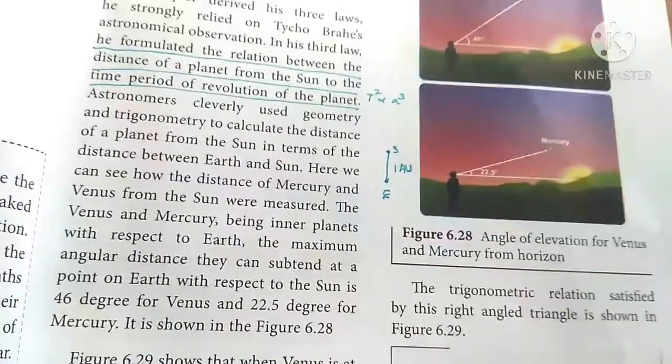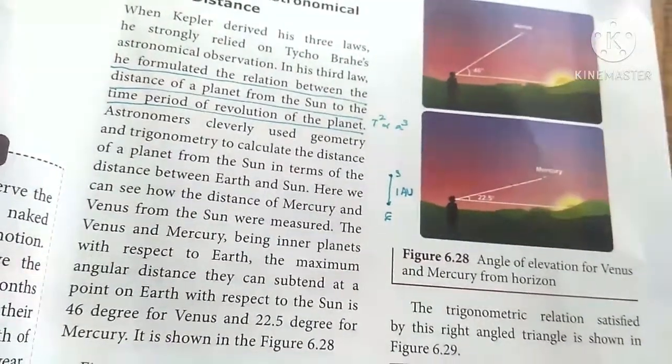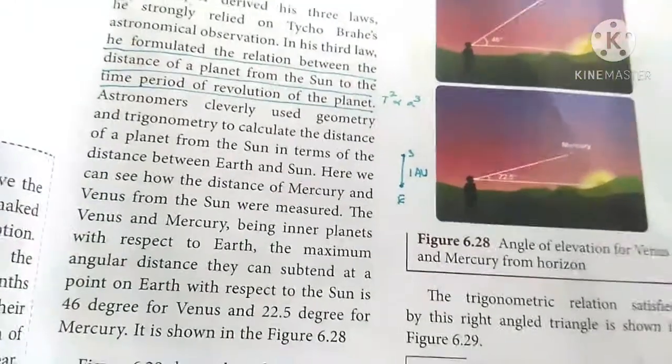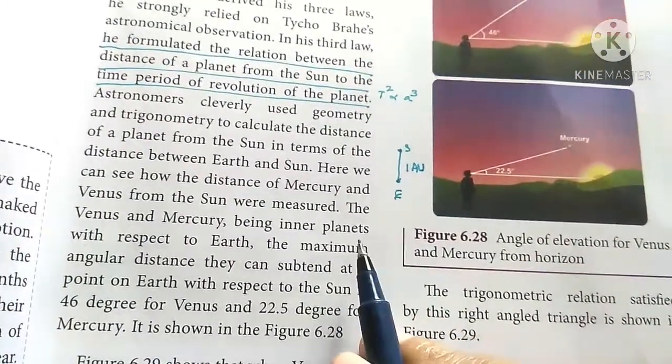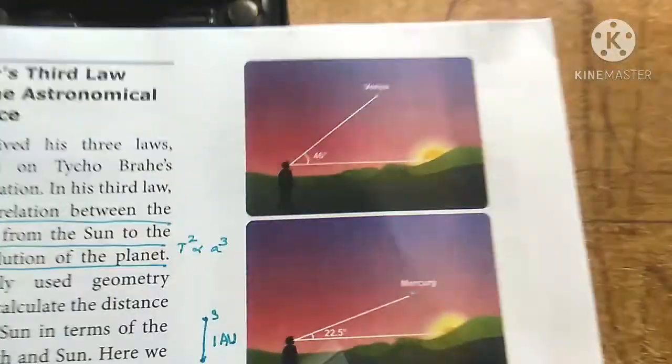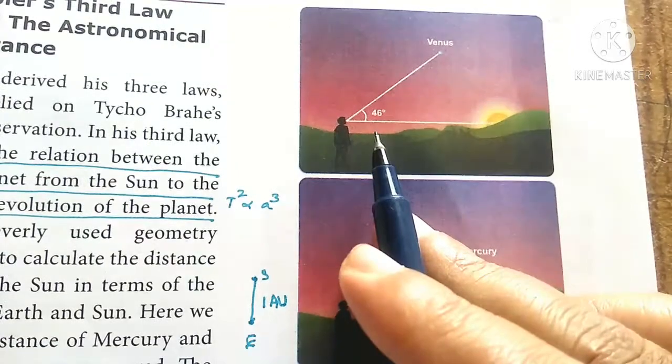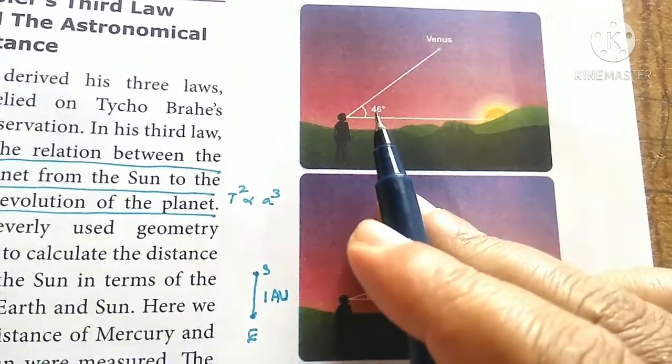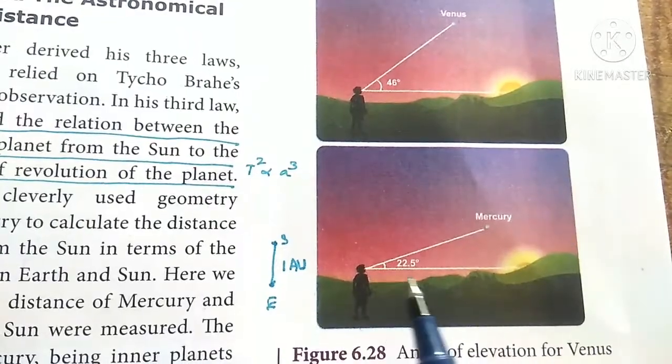Mercury and Venus are inside Earth's orbit. They are called inner planets. Maximum elongation angle for Venus is 46 degrees. Mercury's angle is 22.5 degrees.